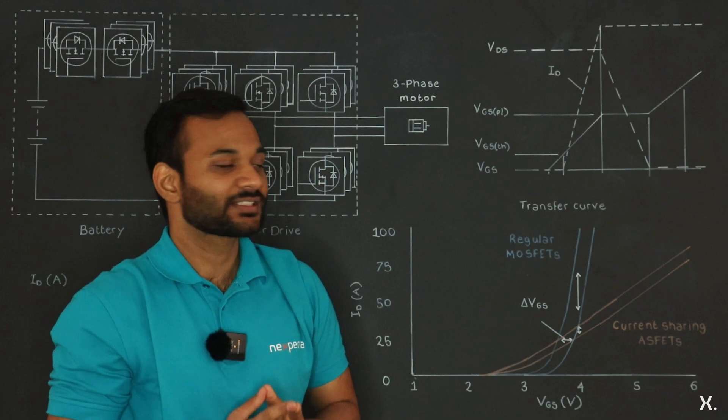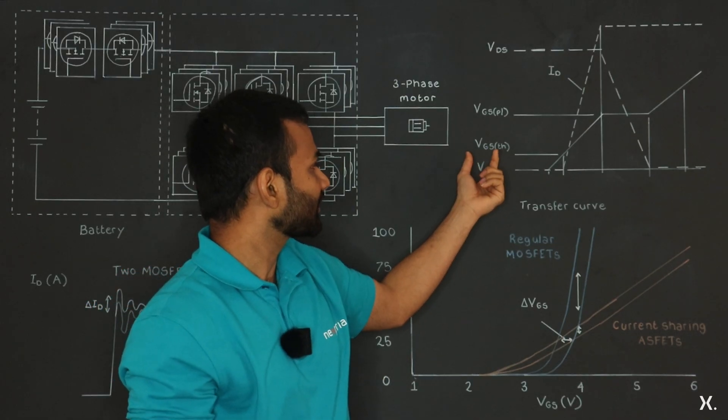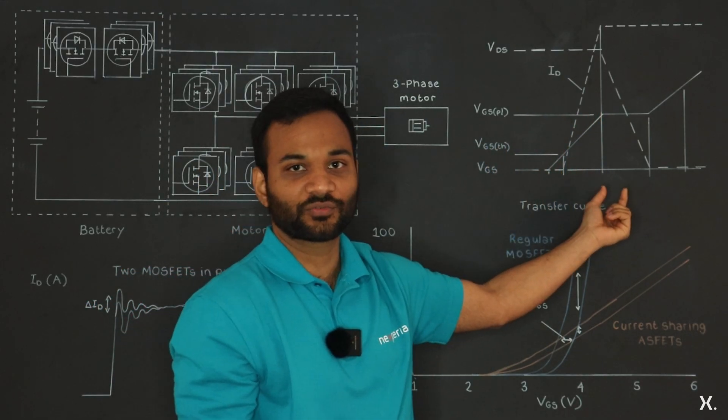So, the current in the MOSFETs start rising from VGS threshold to VGS plateau, which is 2.5V to 4.5V.